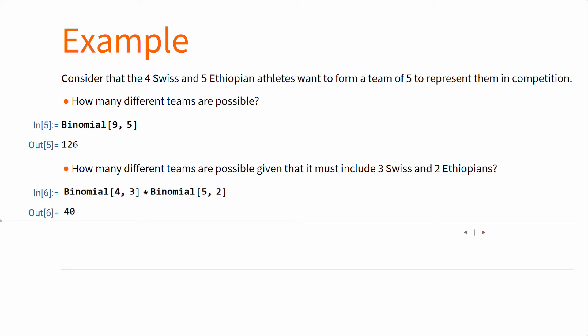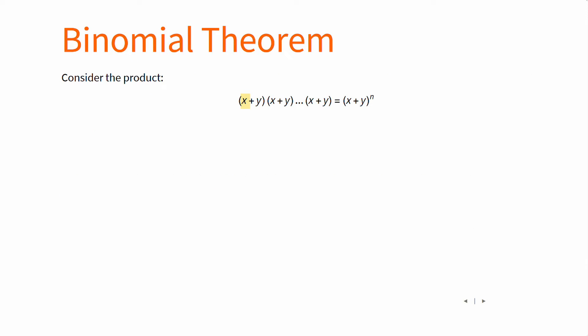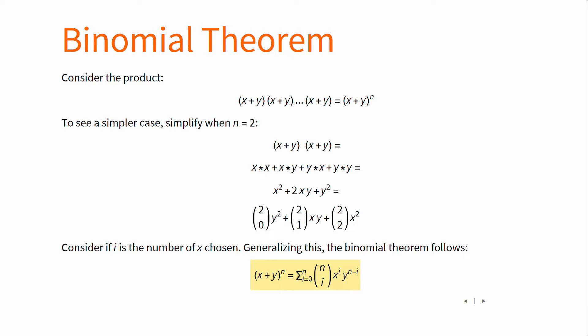Choosing i elements out of n can equivalently be phrased as choosing if someone is in the group or is not. Consider x means one person is in the group, and y meaning that same person is not in the group. Then the situation can be mathematically expressed as x plus y power n. Let's simplify the case where n is equal to 2. With a bit of algebra, this naturally generates all possible binomial coefficients for n is equal to 2. The binomial theorem generalizes this for all n.